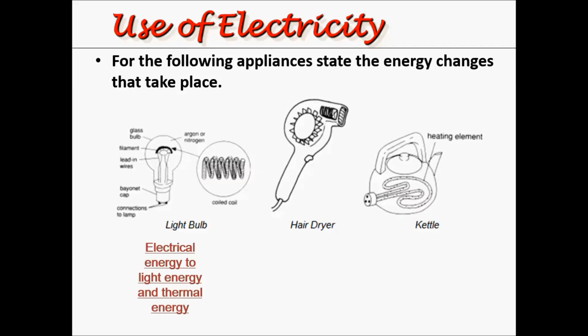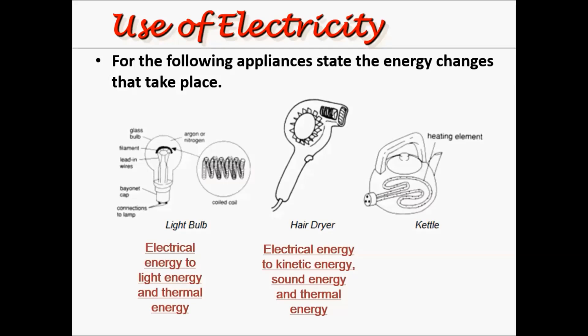For the light bulb, electrical energy changes to light energy and also thermal energy, which is heat. For example, if you touched a light bulb when it was on, it should be hot. For a hairdryer, electrical energy from the power socket changes to kinetic energy — the wind blowing out of the hairdryer because of a fan — and also sound energy. A hairdryer also provides thermal energy. For a kettle, it should just be electrical energy converted to thermal energy, where the electrical energy heats up the water in the kettle.